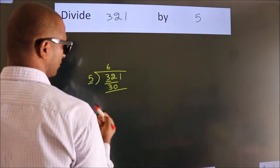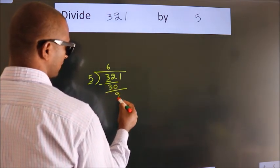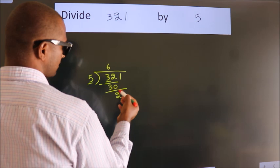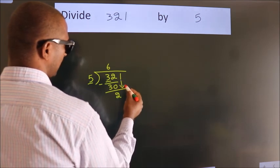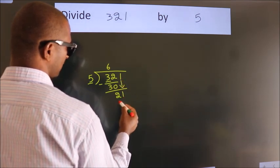Now we should subtract. We get 2. After this, bring down the beside number. So 1 down. So 21.